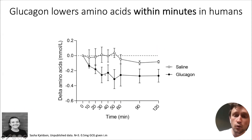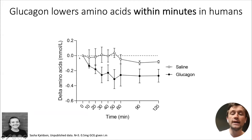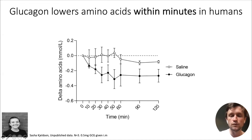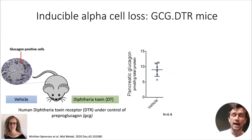Sasha has given glucagon to humans both with and without hepatic steatosis. This control experiment shows the difference between saline and glucagon on circulating plasma amino acids after an overnight fast in healthy individuals. Glucagon, within minutes — so these are non-transcriptional changes — reduces plasma concentration of amino acids. The question is how it can do this. Ureagenesis, we believe, is a key concept.